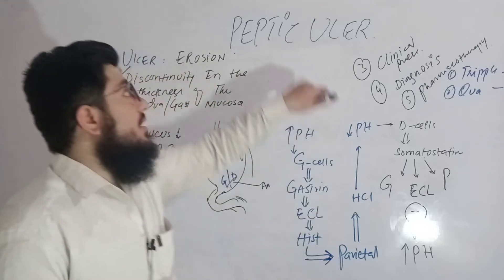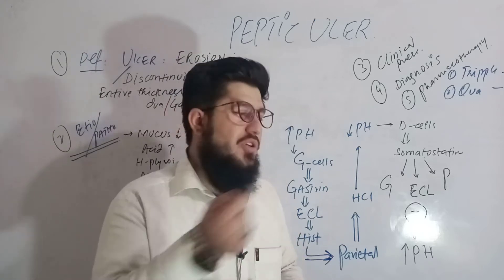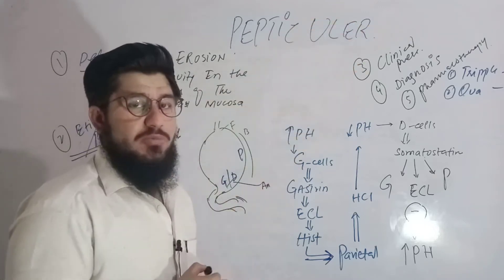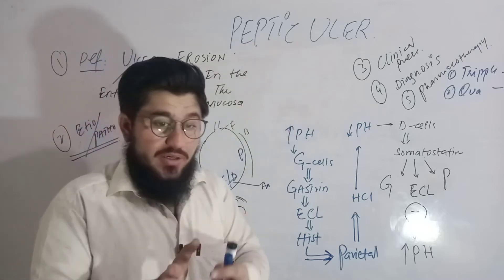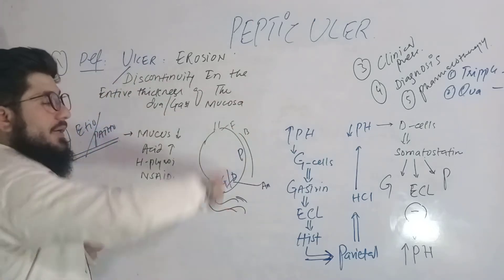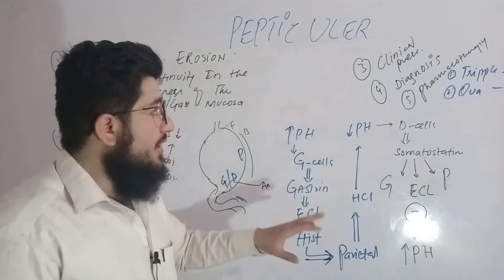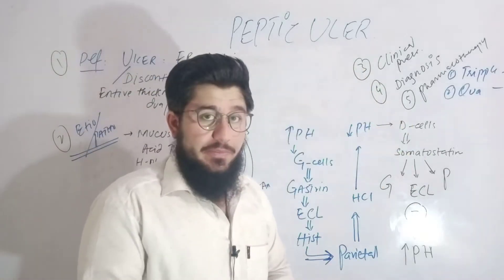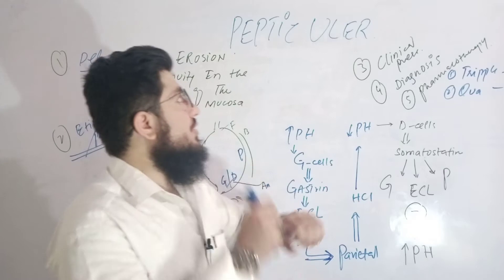The topic under discussion today is peptic ulcer, and this topic is going to be made very easy. We'll go from the very basics — first discussing ulcer, then peptic ulcer, then gastric ulcer and duodenal ulcer. Then we'll cover the etiology and pathophysiology of peptic ulcer, how pH is maintained in the stomach, clinical presentation, diagnosis, and finally pharmacotherapy — specifically triple therapy and quadruple therapy.